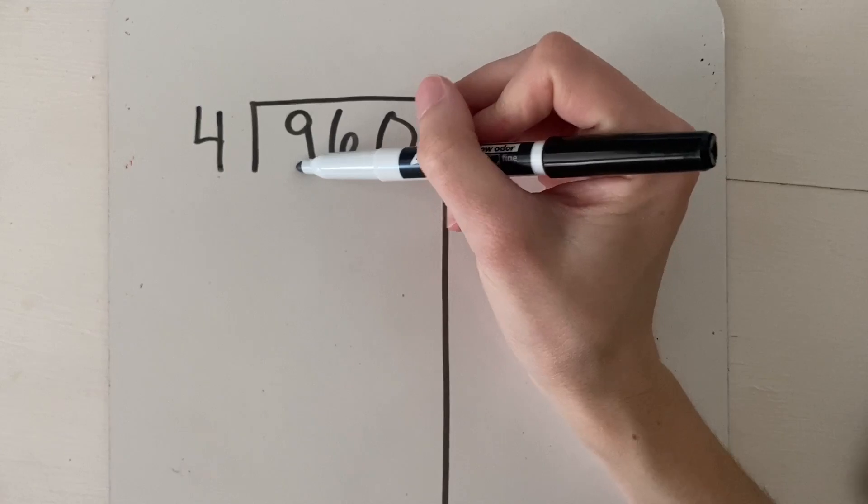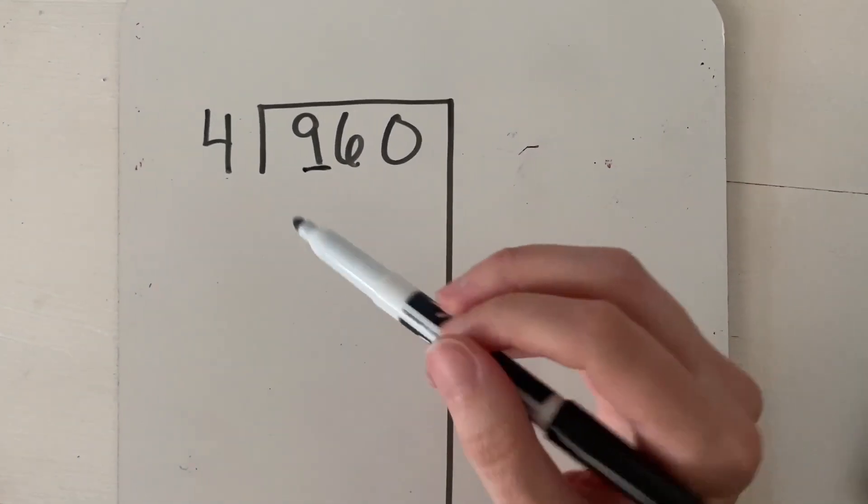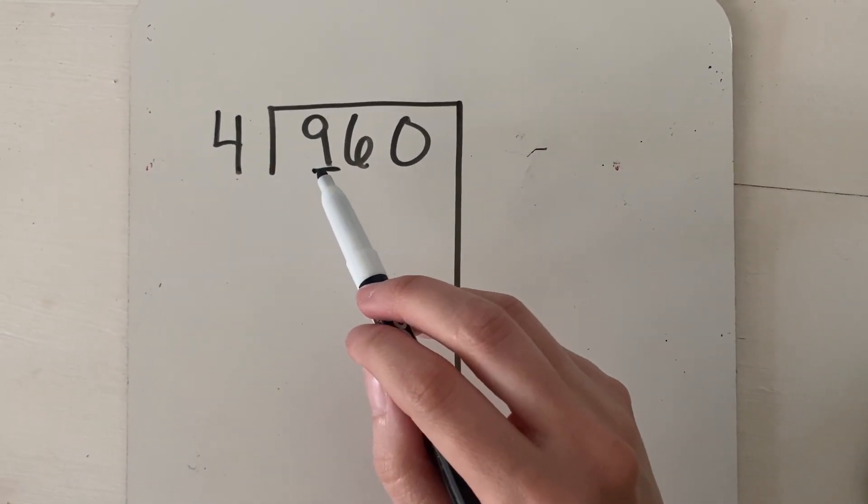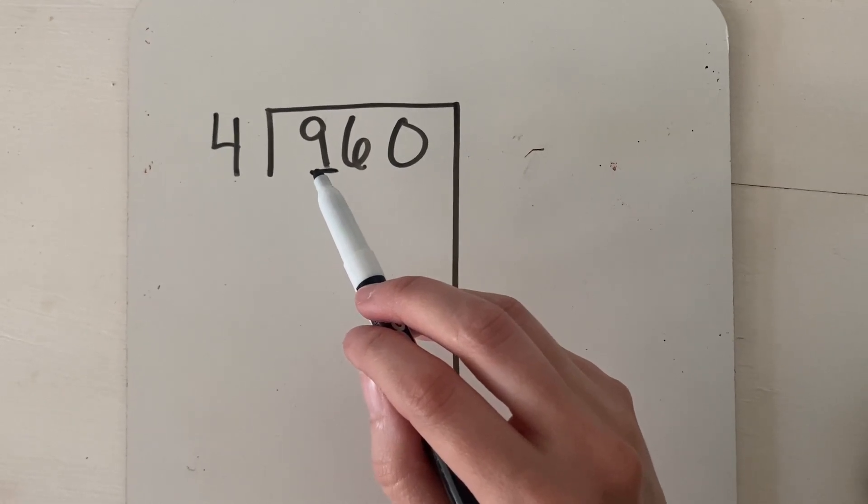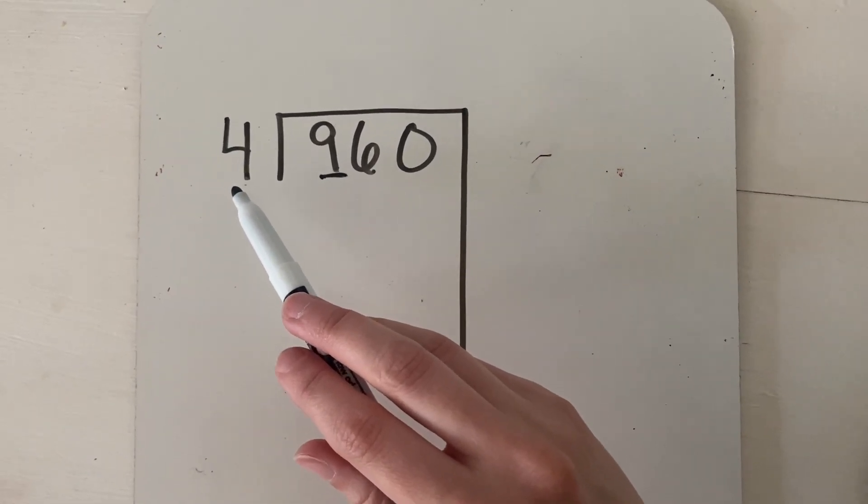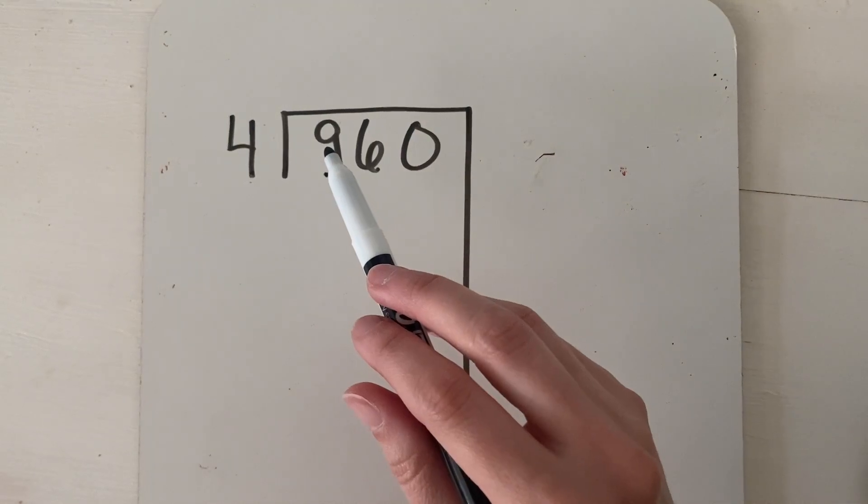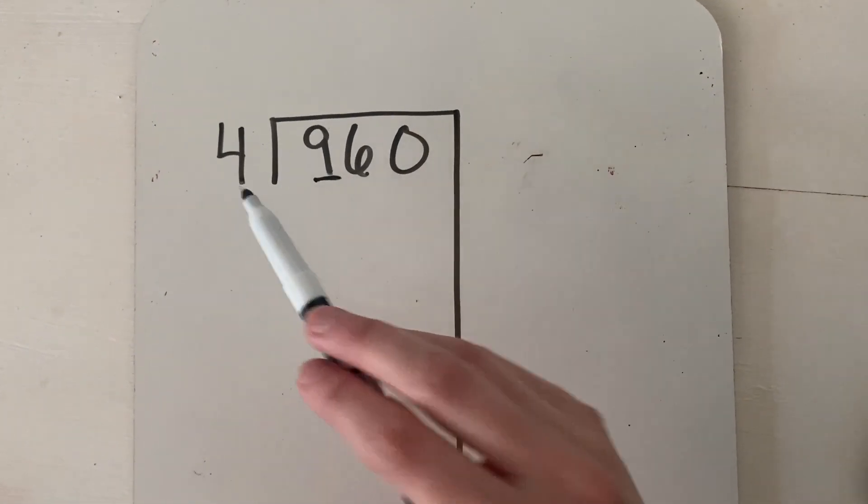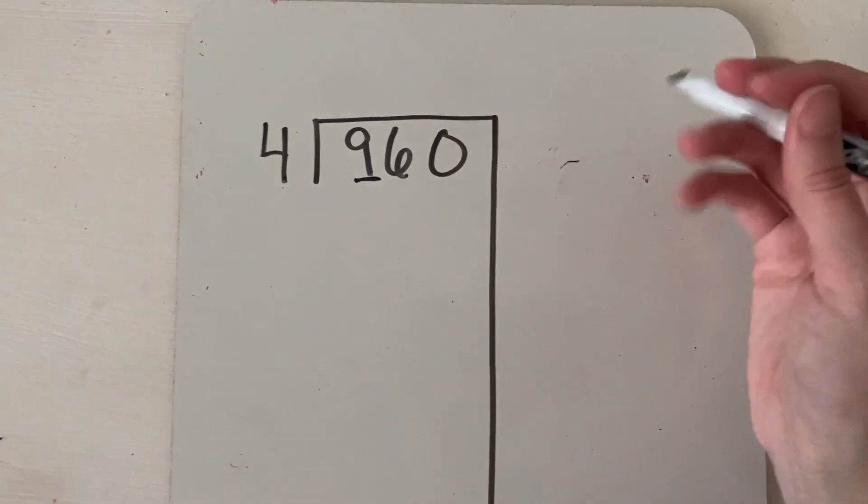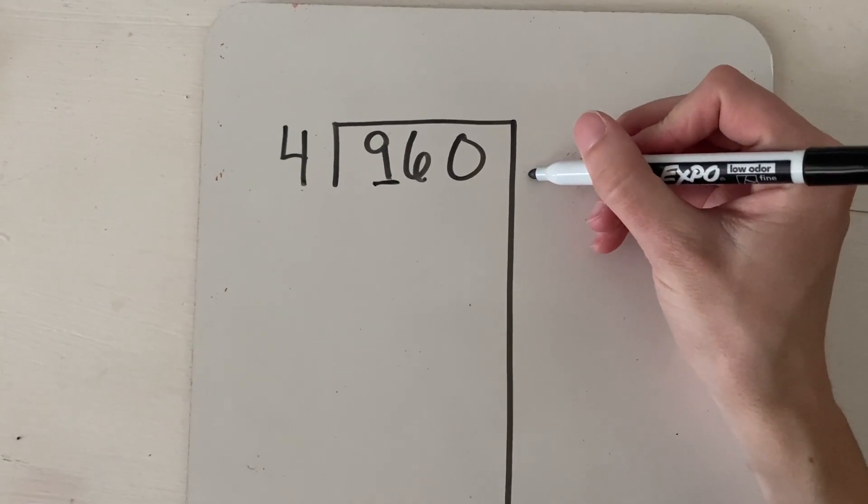So again, I'm going to look at my first digit and think of what's the value. So that nine is really 900 because it's in the hundreds place. So I'm going to ask myself, how many times do I think that four might go into 900? Well, four times 100 would be 400. That's not all the way there, but it's a pretty big guess. So let's go ahead and do that.